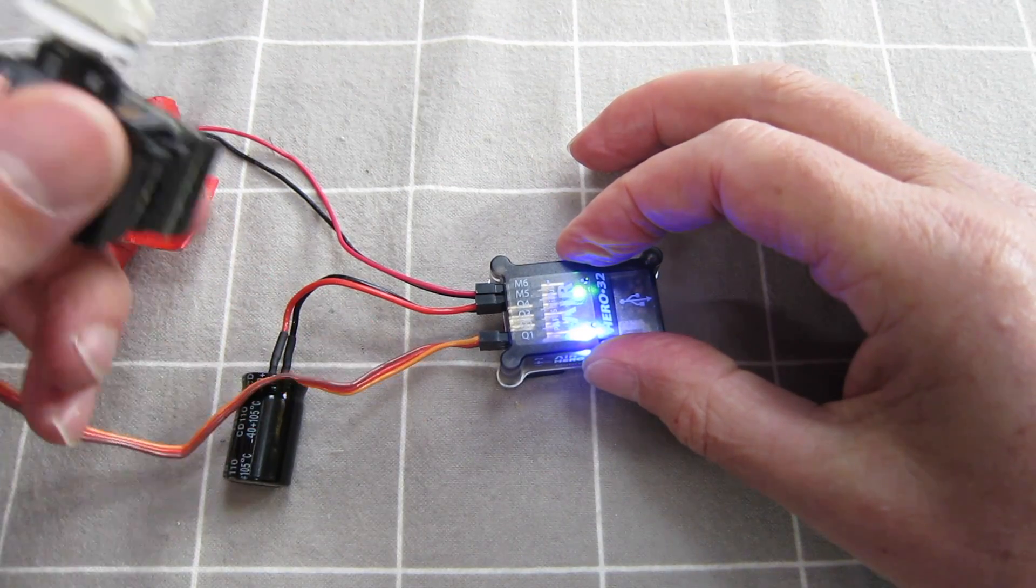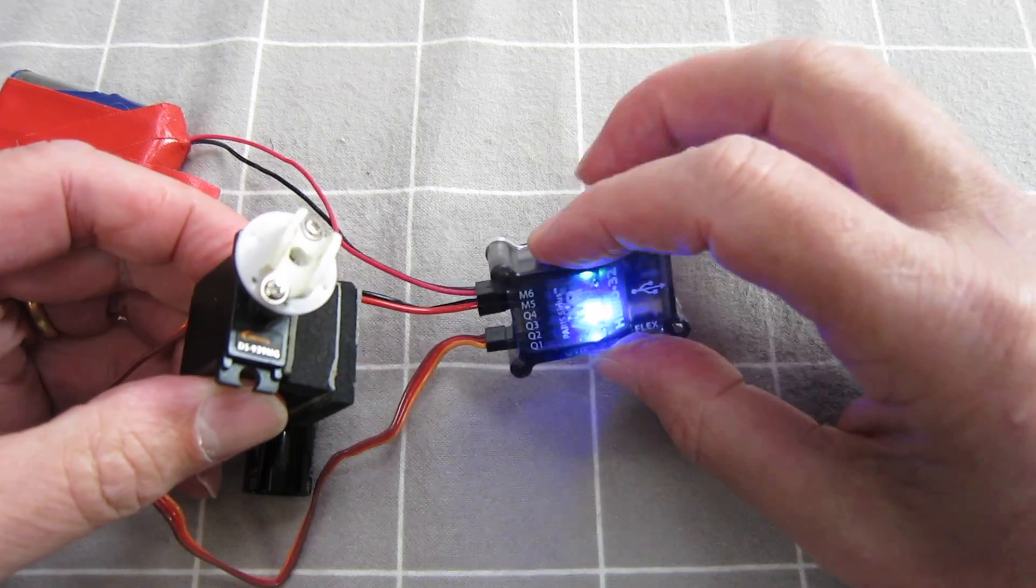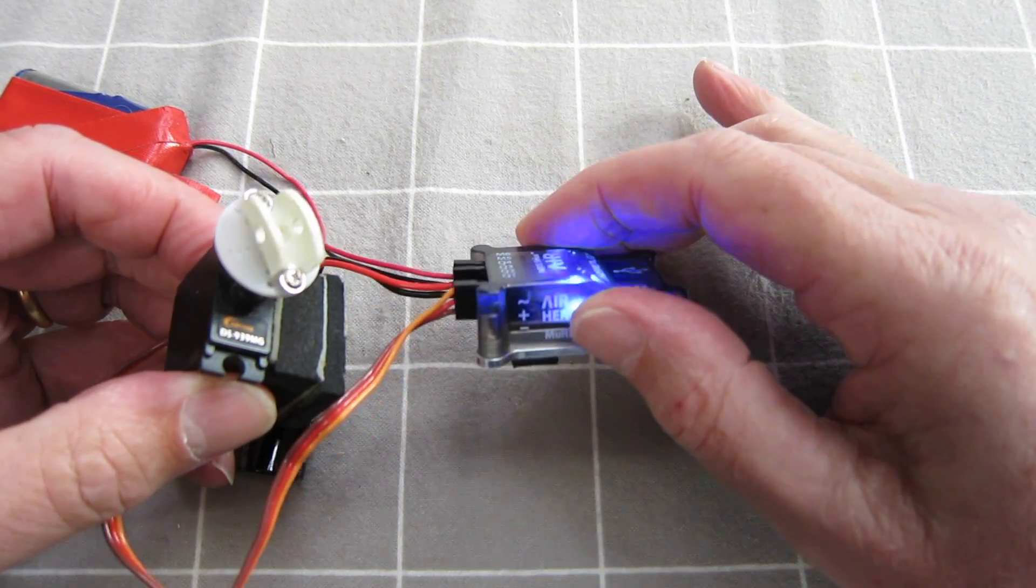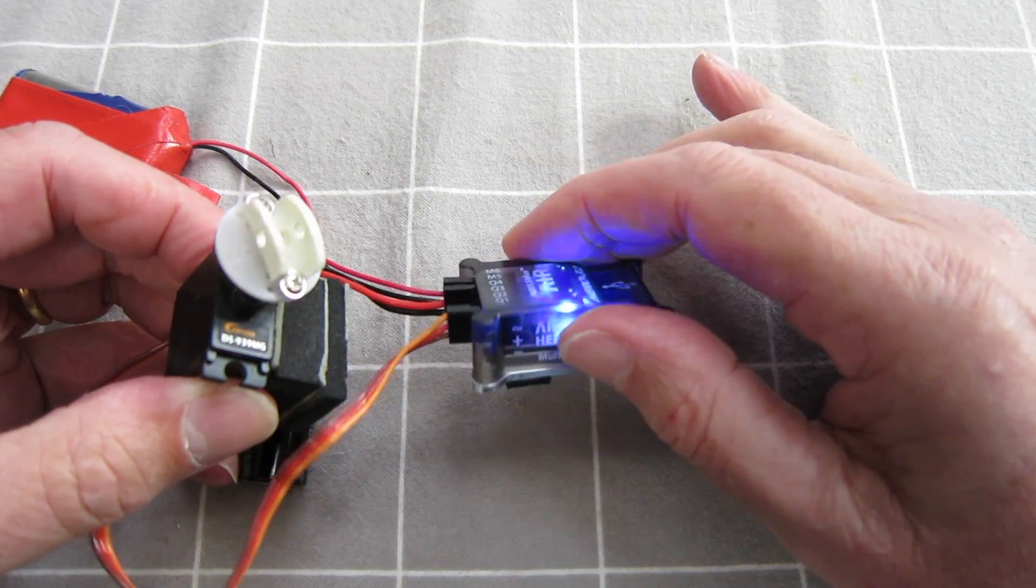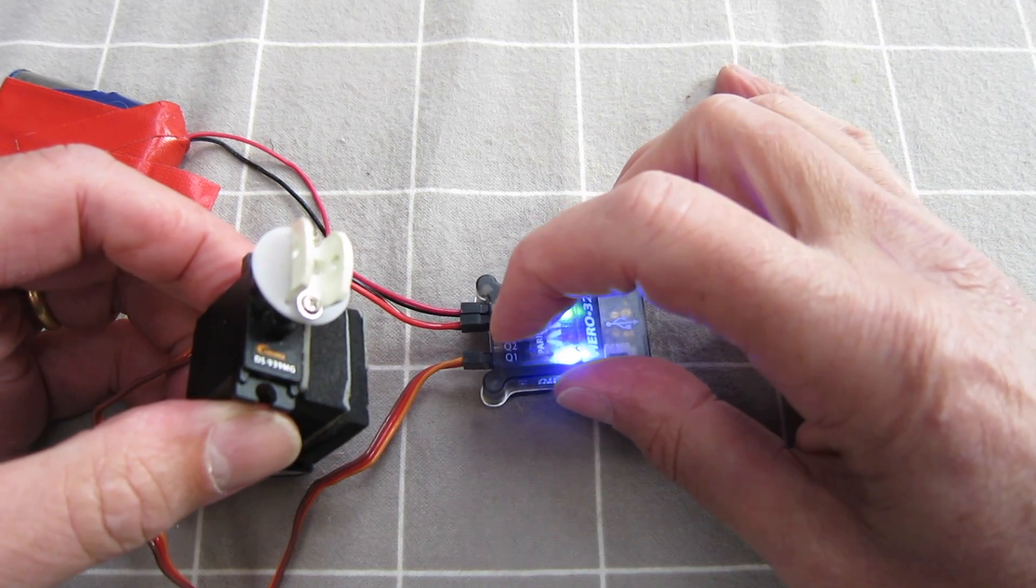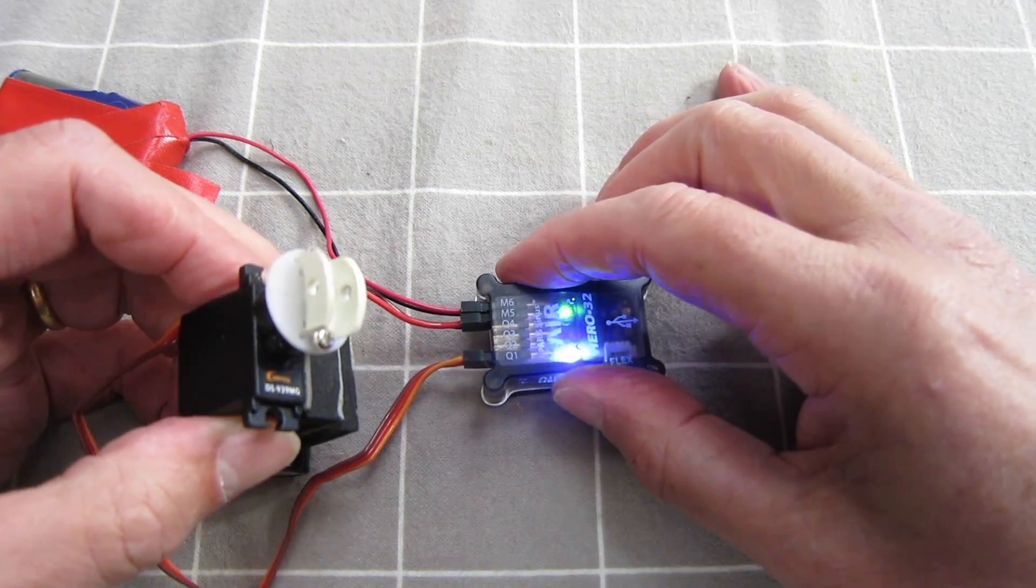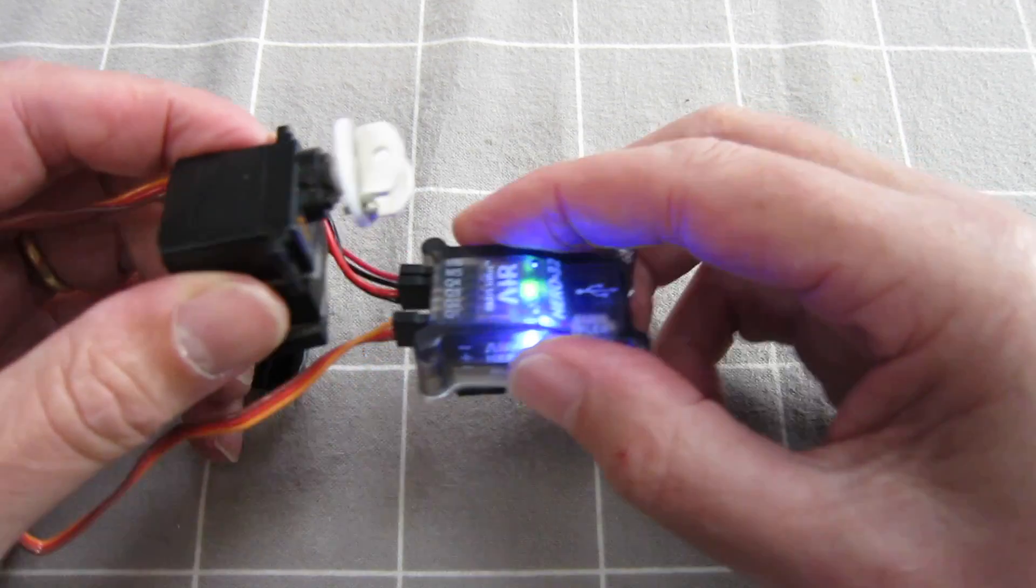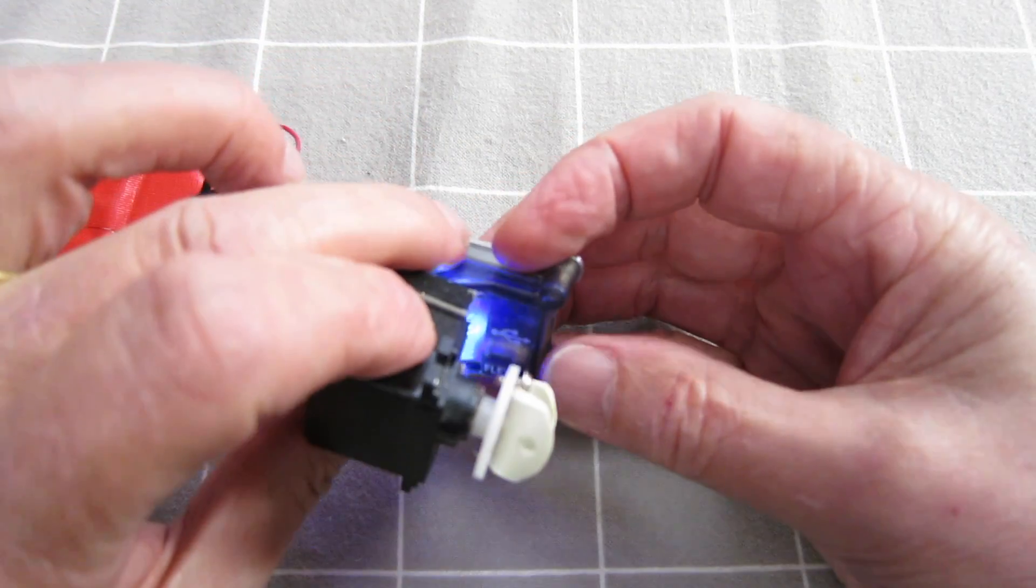There we have the roll axis gimbal. If we plugged another servo into Q2 we'd have the pitch axis as well. How beautifully simple is that?